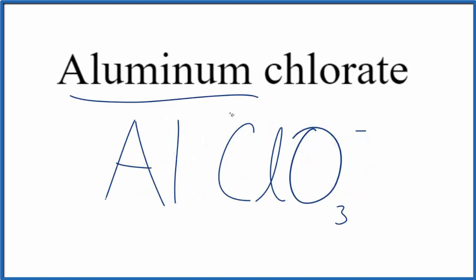Since aluminum is a metal and chlorate is a group of nonmetals (a polyatomic ion), we have an ionic compound. We need to consider the charge when we write the formula for aluminum chlorate.